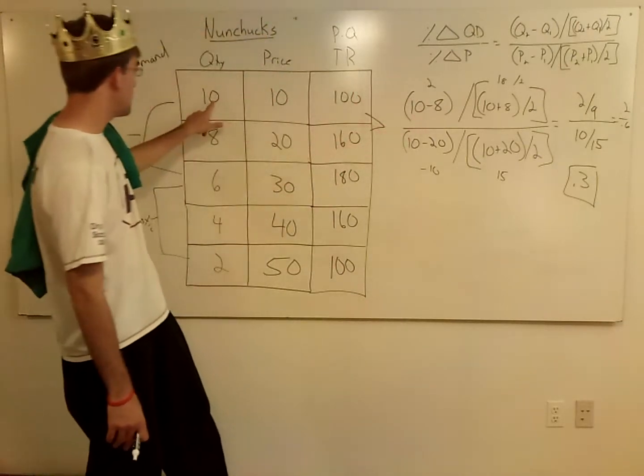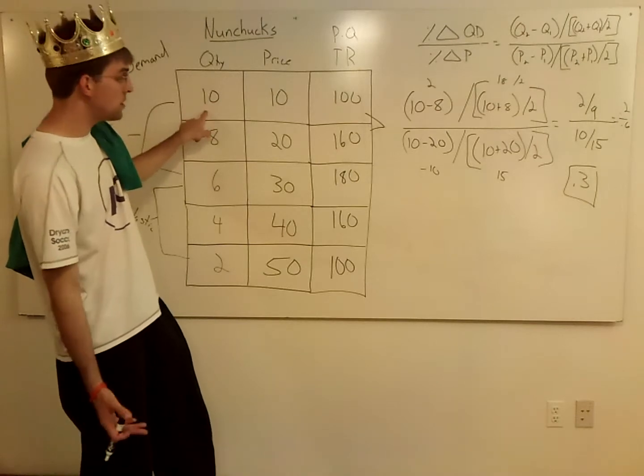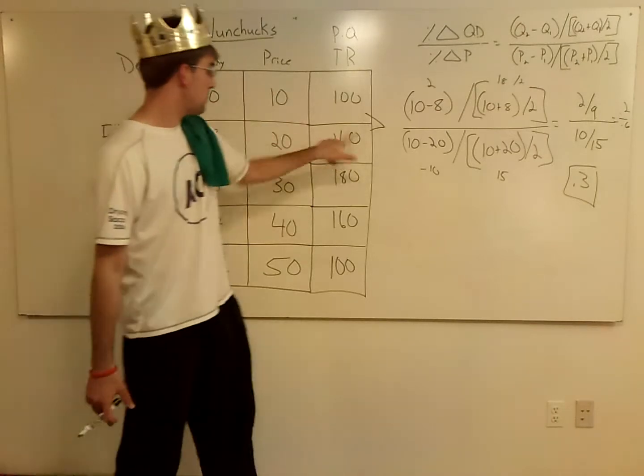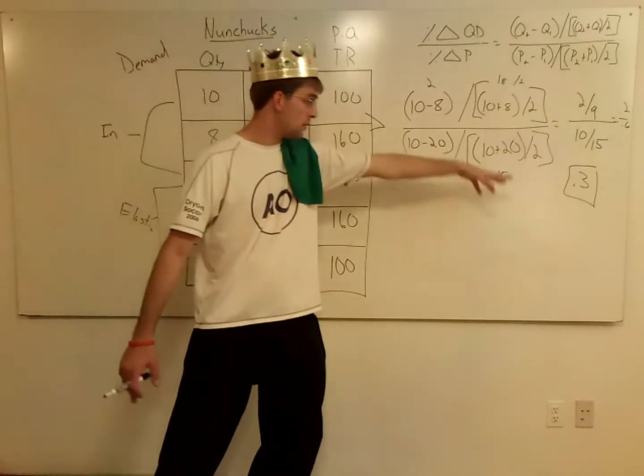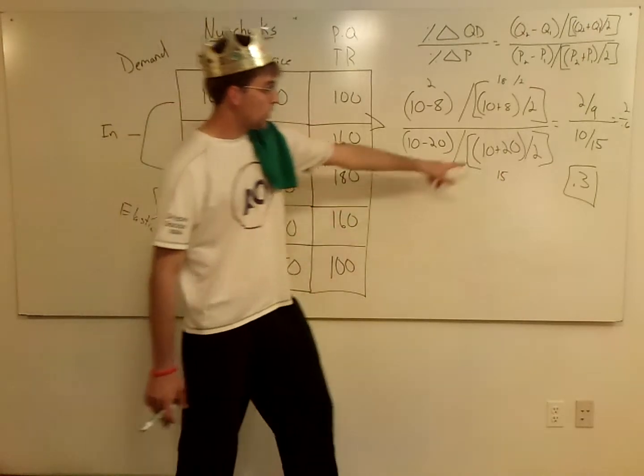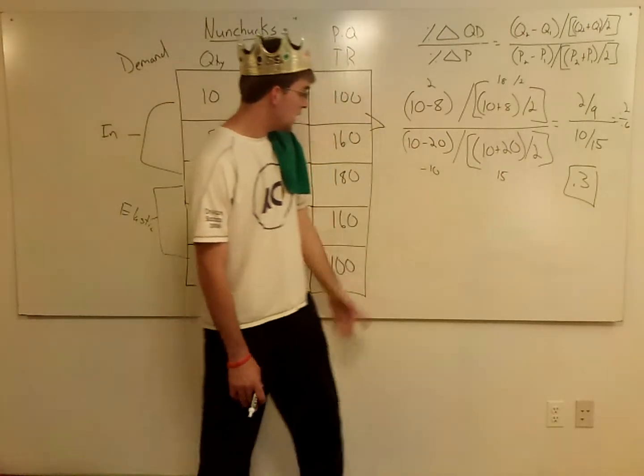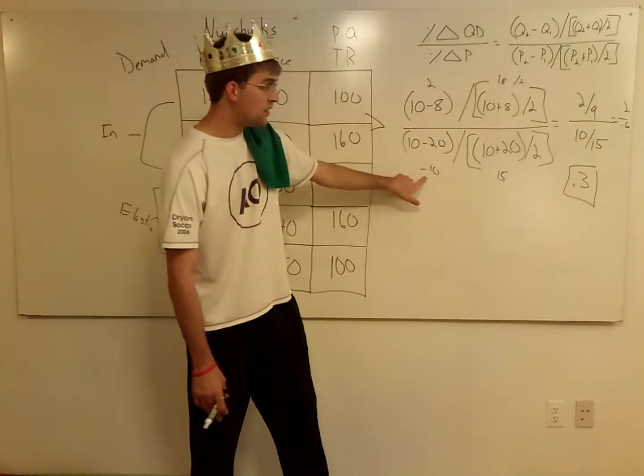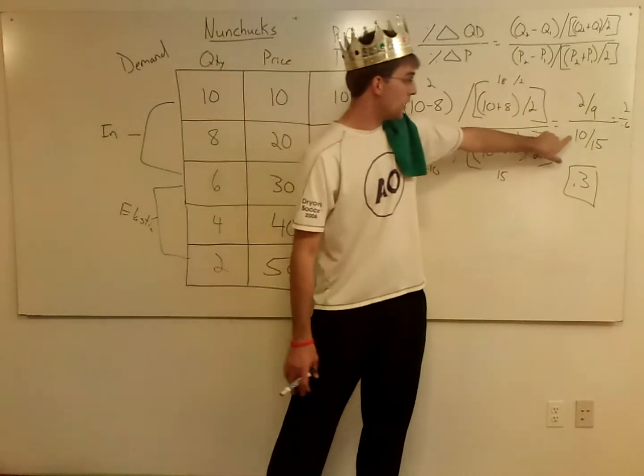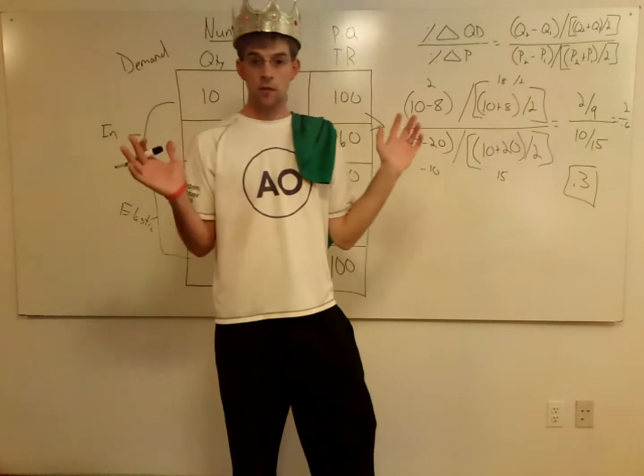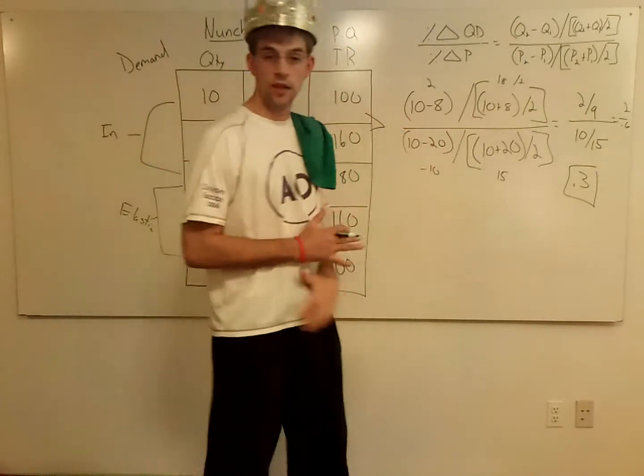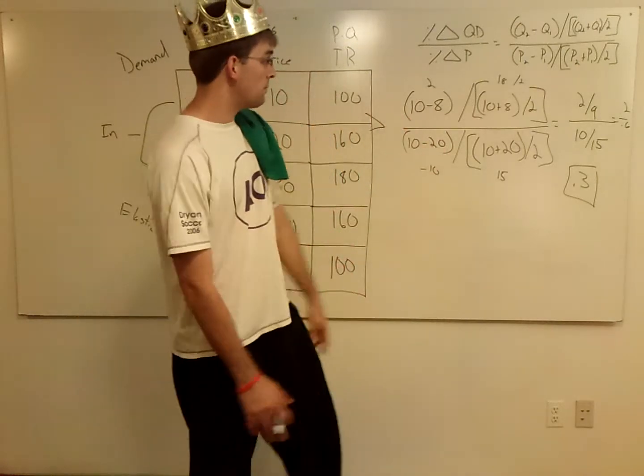10 minus 20 gives me a negative 10, which you'll notice over here I got rid of because we don't care about the positive or negative sign. We're looking for the absolute value here. And I got 0.2 over 0.6, which is 0.3.